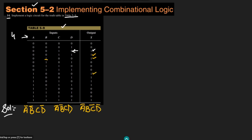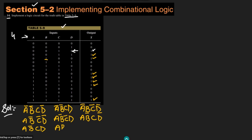Similarly, the output that is 1 with input 1000 gives A, B complement, C complement, D complement. Then 1001 gives A, B complement, C complement, D. The one with 1010 gives A, B complement, C, D complement. And the last one is 1111, so it is A, B, C, D.